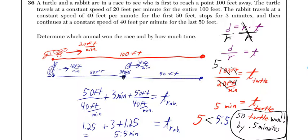What about for the rabbit? He did 50 feet over his rate of 40 feet per minute. He actually did that twice. I'm going to put it at the beginning, then the 3 minute break, and then 50 feet over 40 feet per minute again at the end. That comes out to 1.25 minutes, then you have 3 minutes, and then another 1.25 minutes. In total, that's 5.5 minutes.